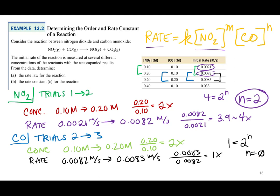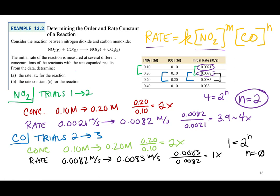So the rate law for this equation is: rate equals k times the concentration of NO₂ squared times the concentration of CO raised to the zero power, because NO₂ is second order and CO is zero order.